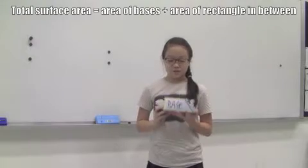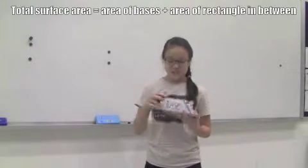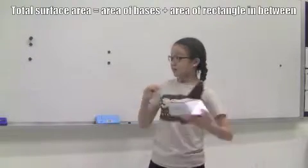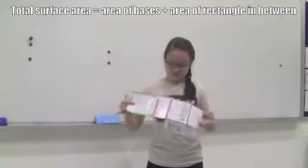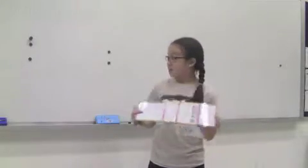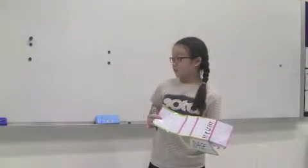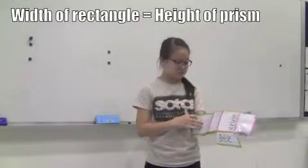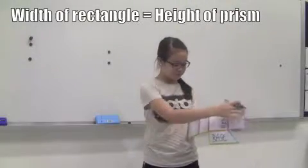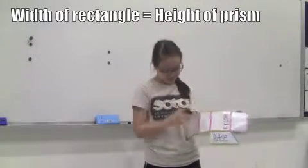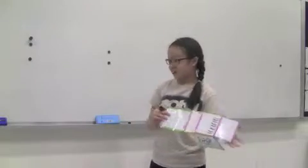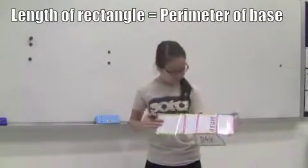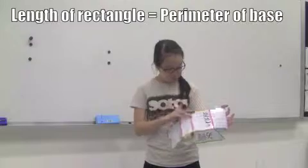To find the total surface area, we add the area of the two bases and the rectangle in between. The width of the rectangle is the height of the prism. The length of the rectangle is the perimeter of the base.